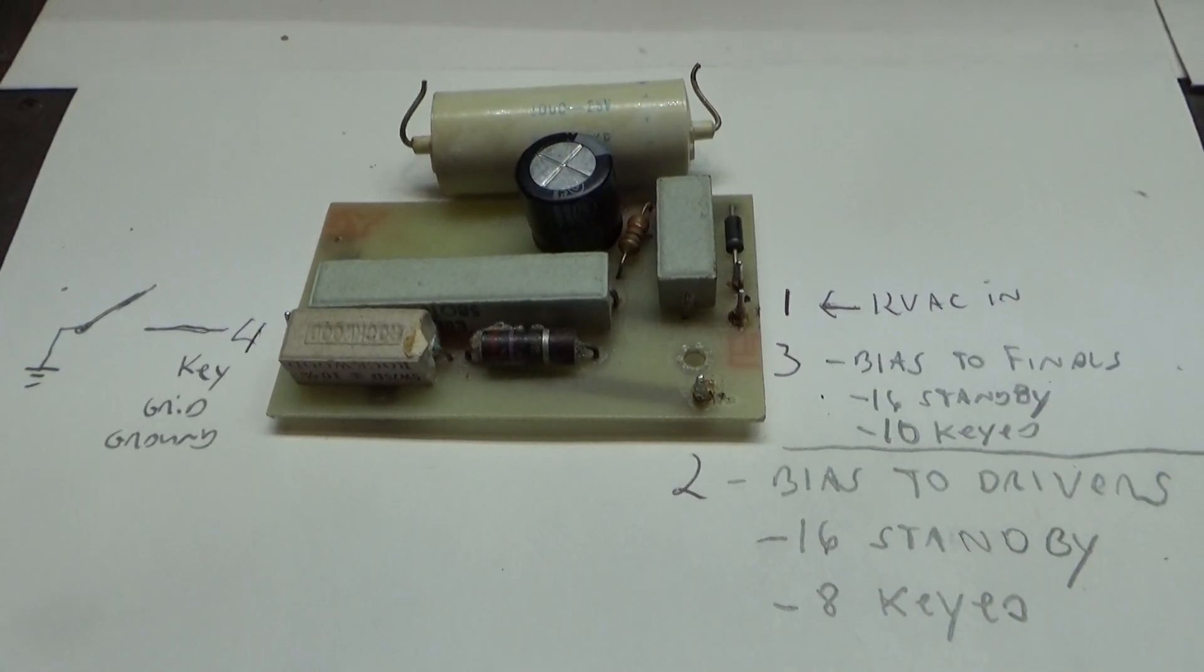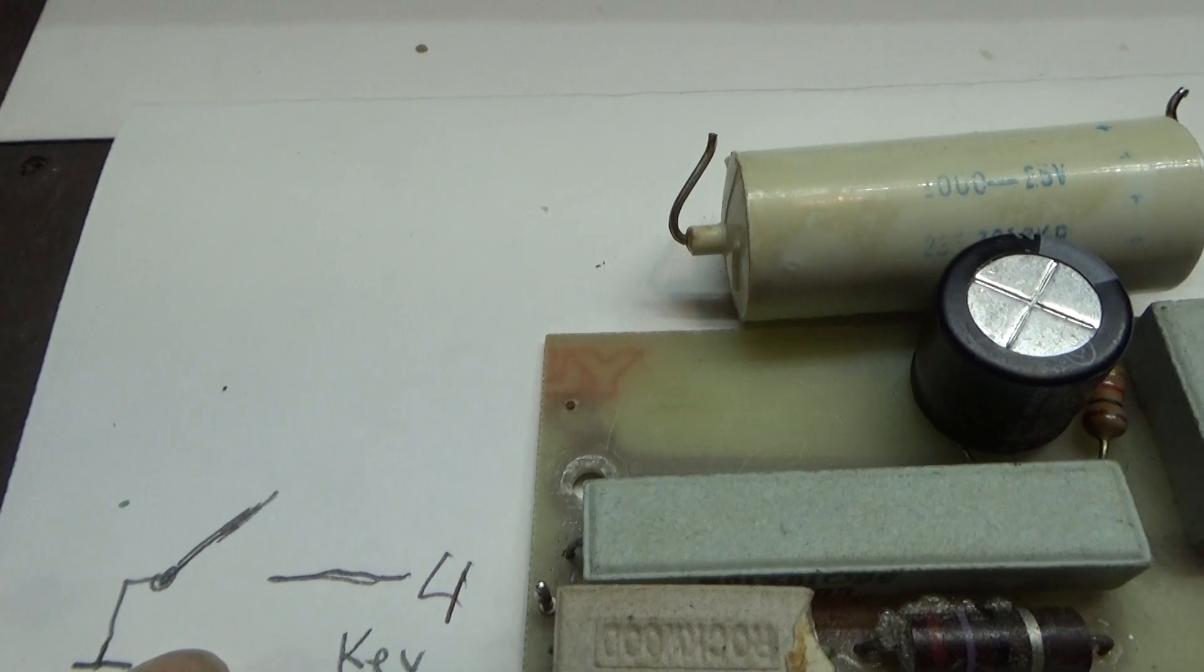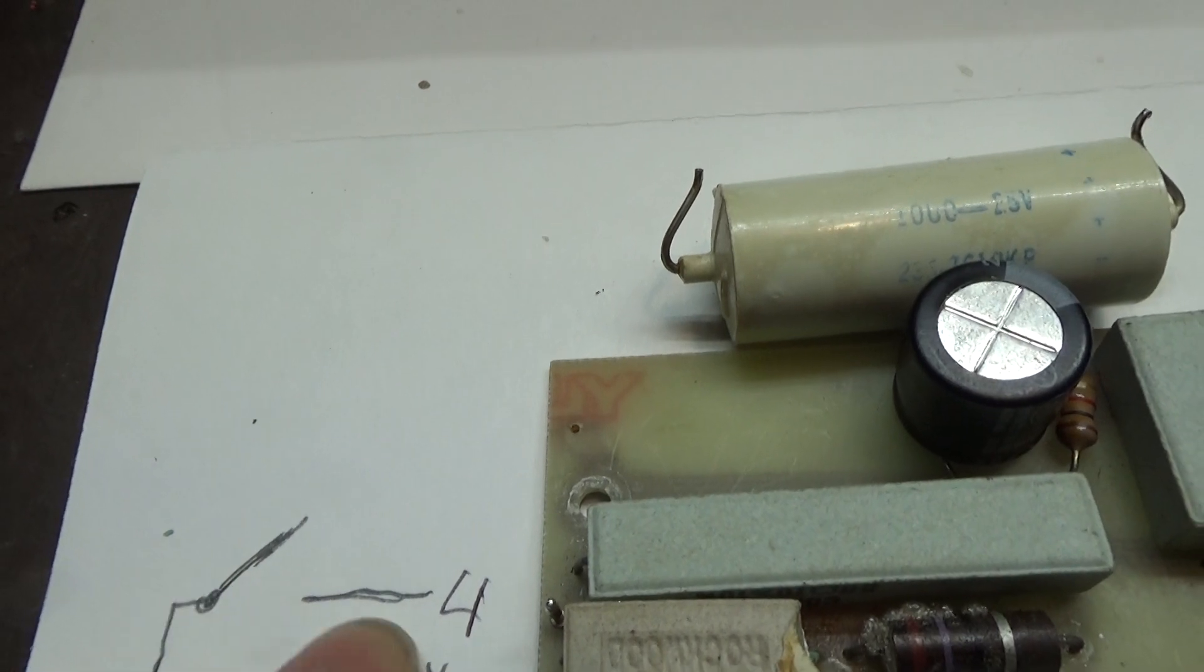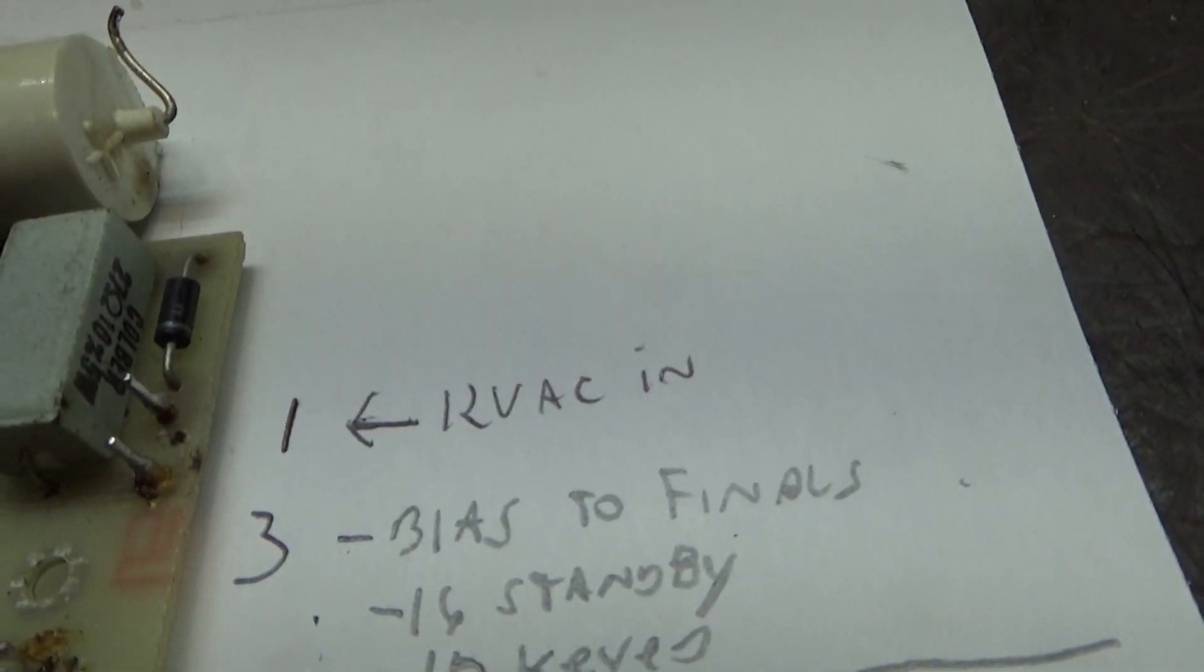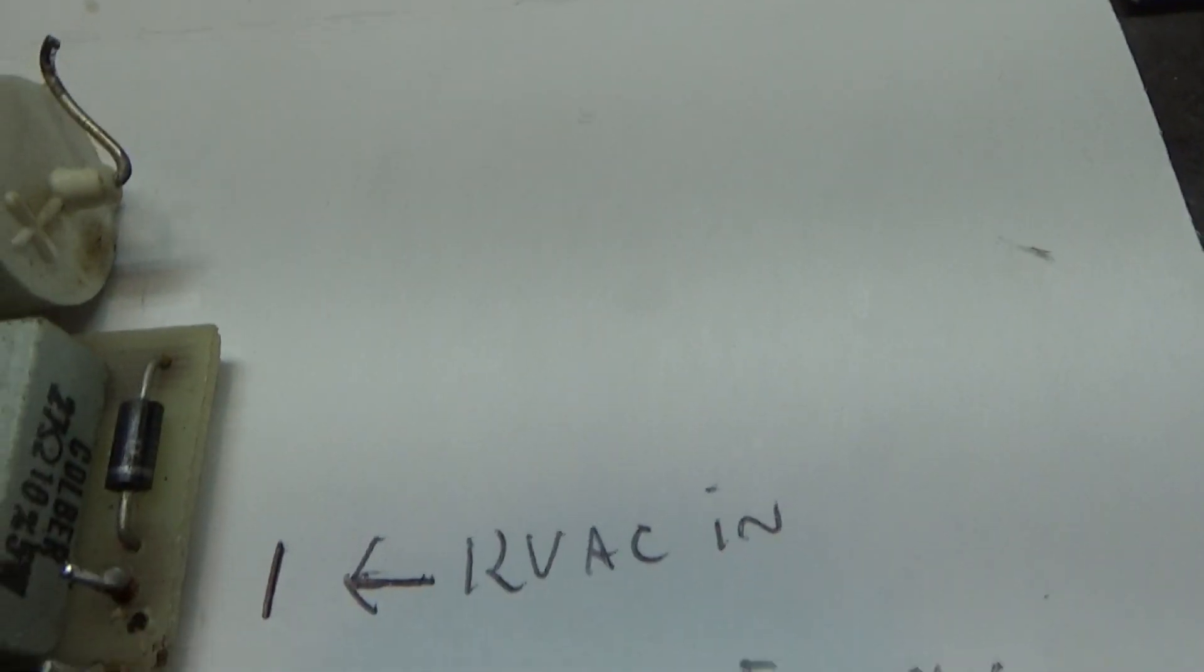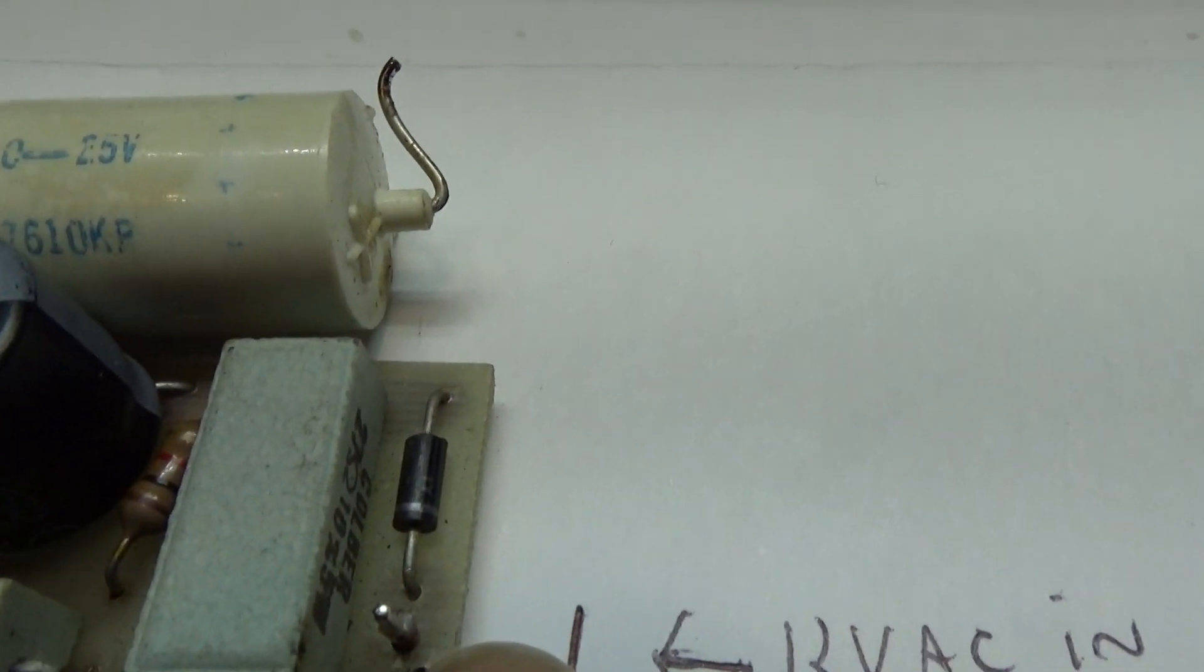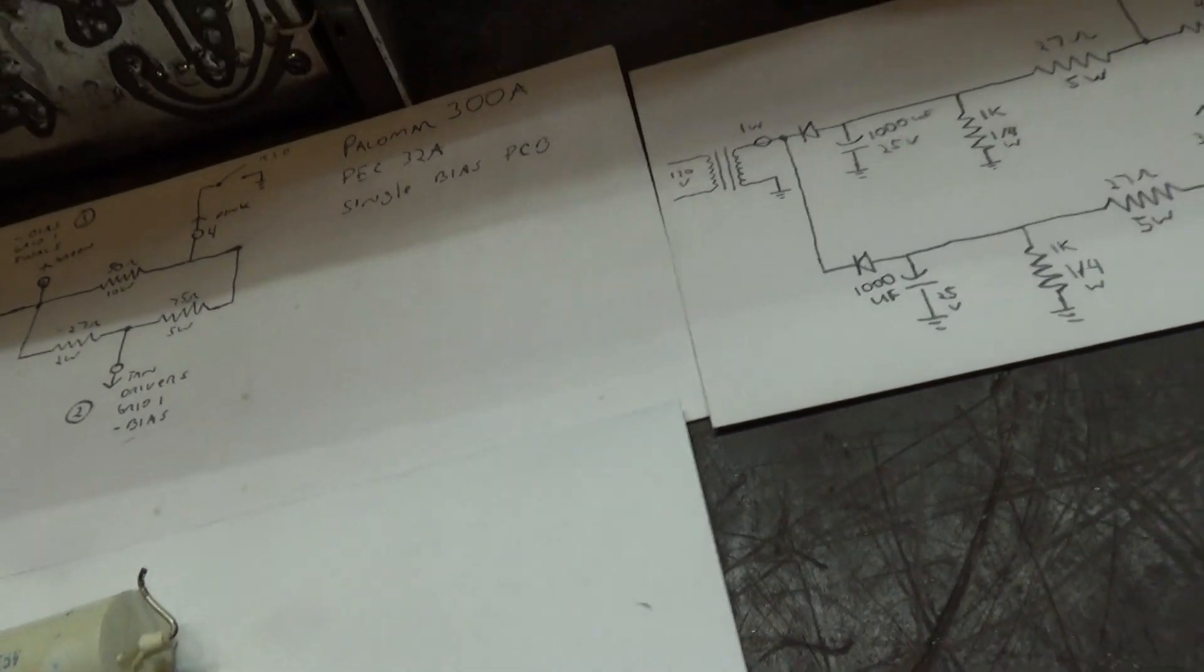That's a little pinout or chart I made of what does what. That over here, that's the relay switch. When the relay keys in, when you key down, it puts a ground on that pin there. This bottom one is the negative bias to the driver tubes, that's the negative bias to the final tubes, and then that one above that next to the diode there is just the AC coming in, the low voltage AC coming in.